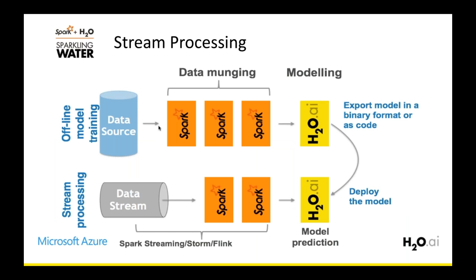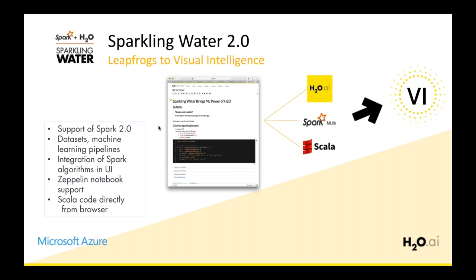For stream processing: after data munging and modeling in a Spark plus H2O pipeline, you can export the whole pipeline in a binary format and deploy it in a streaming environment where data comes in from Spark Streaming, Storm, or Flink, using the entire pipeline for processing. Sparkling Water 2.0, released late last year, adds more visual intelligence capabilities, Zeppelin notebook support, the ability to integrate Spark algorithms in Flow, and the ability to write Scala code directly in the browser.